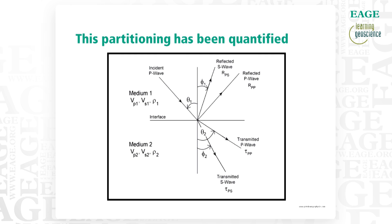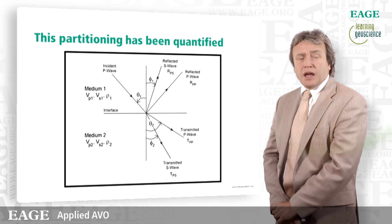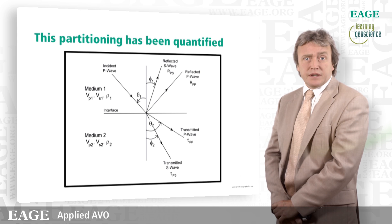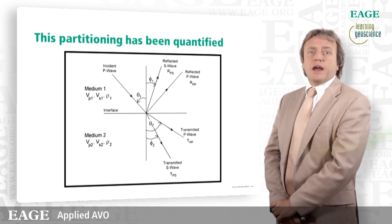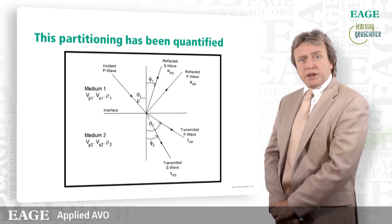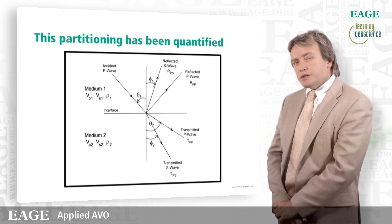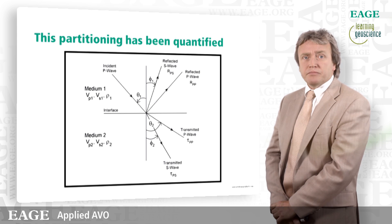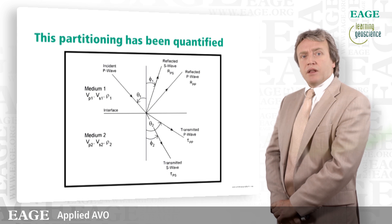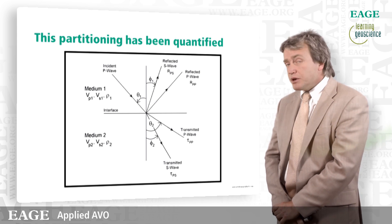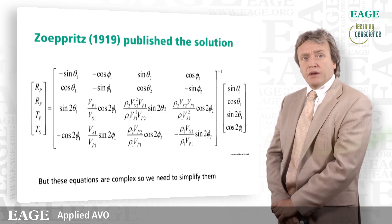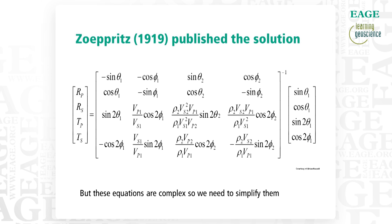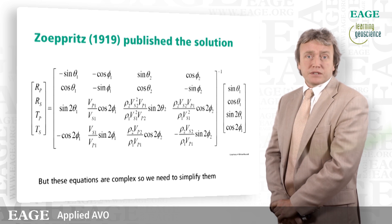This energy partitioning has been quantified. Here you see a diagram showing an interface where above we have a VP, a VS, and a density, and below a different VP, VS, and density — for example, a shale on a sand. We have our incident P-wave converting to a reflected P-wave, a reflected shear wave, a transmitted P-wave, and a transmitted shear wave. So a single pulse goes into the Earth and four pulses come out. This work was done over 100 years ago by Carl Zoeppritz, and in 1919 a posthumous paper was published including the solution for the partitioning of energy at an interface.